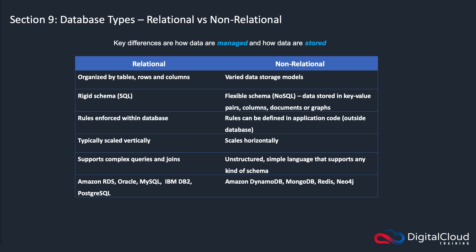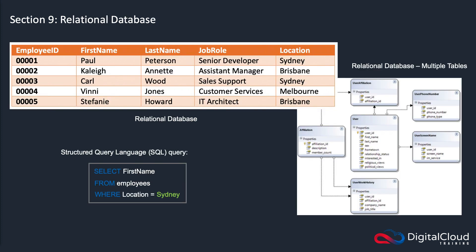That's just a quick overview of relational versus non-relational. Let's have a look at some examples. This is an example of a relational database — it's essentially a table, and the table has certain attributes in it. Every one of those needs to be populated. You can then query that table using SQL, structured query language, and these can get really complex. A simple example would be looking for the first name from the employees table and finding users who have the location set to Sydney. You can also have relational databases with multiple tables.